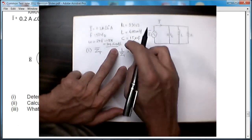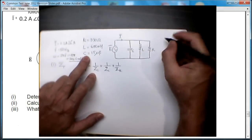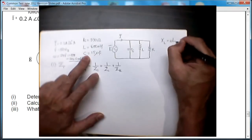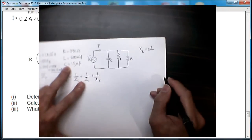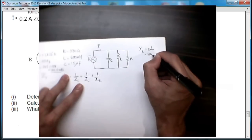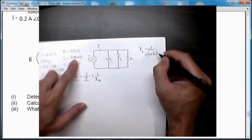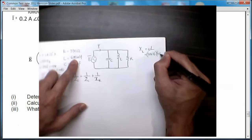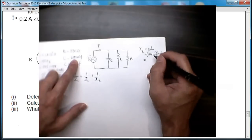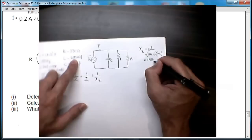From here then I can calculate the reactance due to the inductor, which is given by this formula: XL = ωL, which is equal to 314.16 multiplied by the inductor value which is 0.6 Henry. That gives me a total impedance of 188.5 ohms.